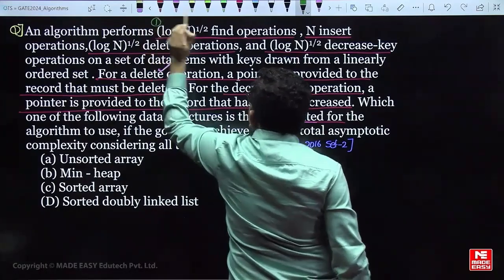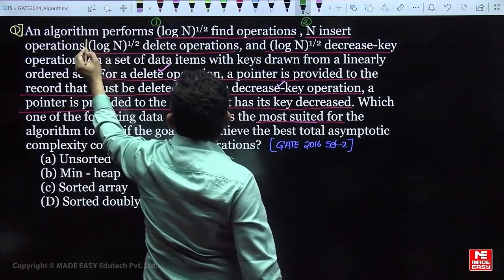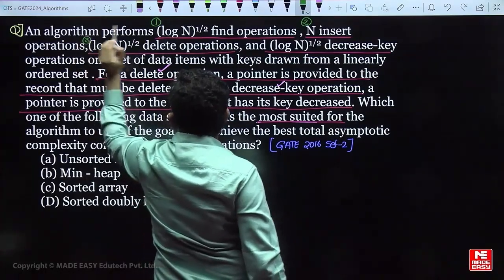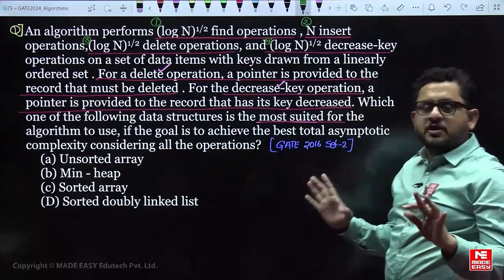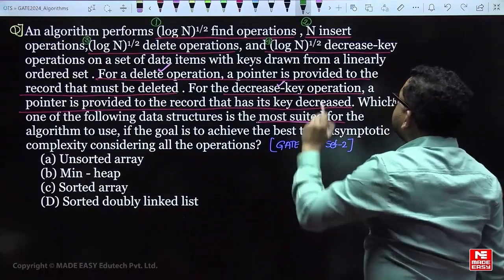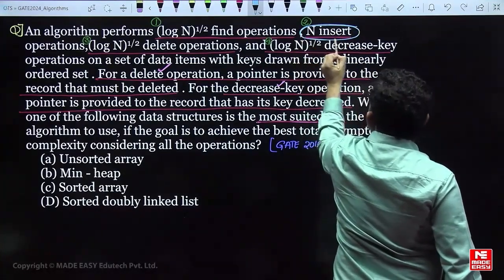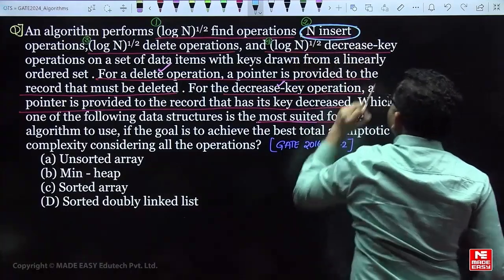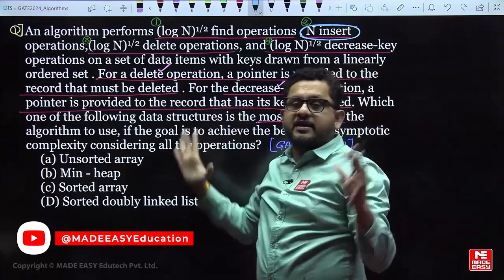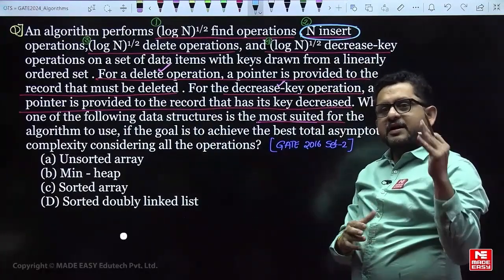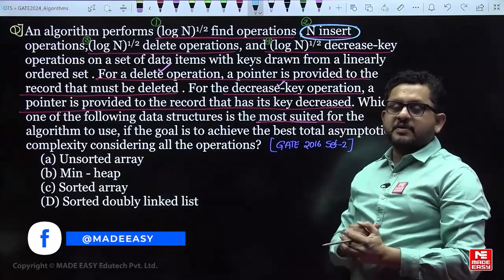The operation counts are: √(log n) find operations, n insert operations, n·√(log n) delete operations, and √(log n) decrease-key operations. The most number of operations is insertions — n insertions is much higher than the remaining operations. So we should prefer the data structure most suitable for insertion.